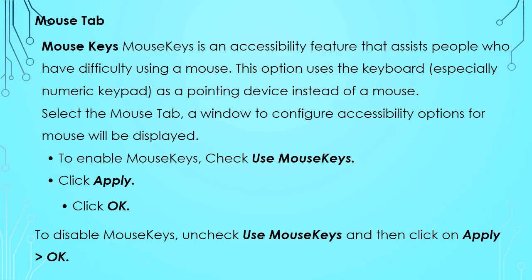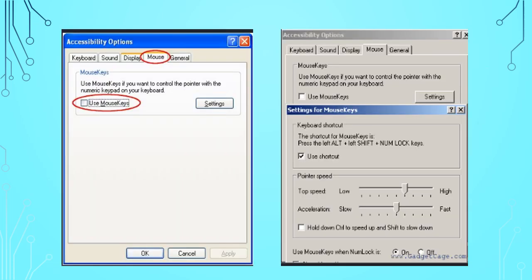The fourth tab is the Mouse tab. This tab helps to do settings for Mouse Keys. Mouse Keys is an accessibility feature that assists people who have difficulty using a mouse. This option uses the keyboard — especially the numeric keypad — as a pointing device instead of a mouse. To enable Mouse Keys, check 'Use Mouse Keys', click Apply, then click OK. To disable, uncheck 'Use Mouse Keys' and click Apply, then OK. Look at the figure to understand from where you have to set the Accessibility Options.